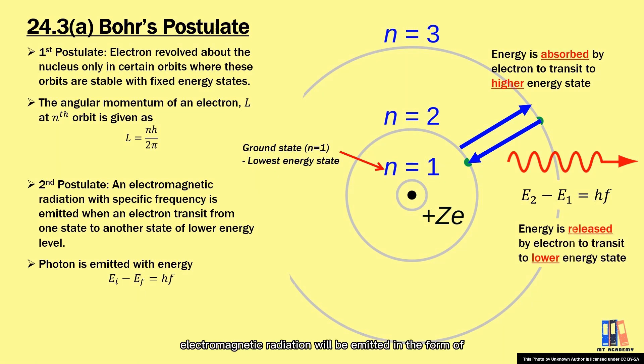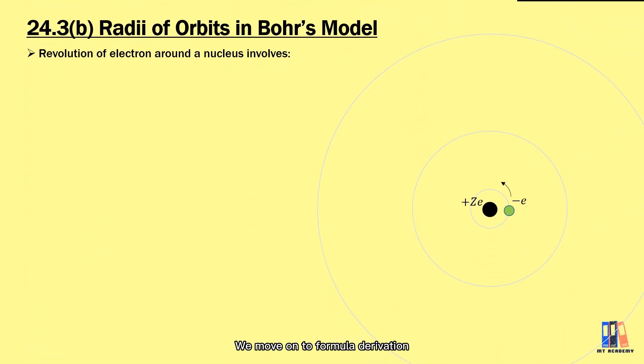For this case, electromagnetic radiation will be emitted in the form of photon with specific frequency based on the difference between the energy state, for example E₂ - E₁ for this diagram. We move on to formulaic derivation.